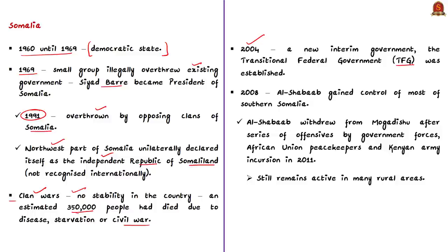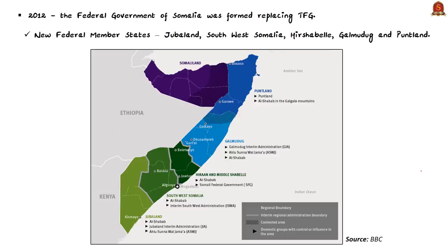In 2004, a new interim government called the Transitional Federal Government (TFG) was established to improve governance in the country. But in 2008, al-Shabaab, which has links with al-Qaeda, gained control of most of southern Somalia. After a series of offensives by government forces, African Union peacekeepers, and a Kenyan army incursion in 2011, al-Shabaab withdrew from Mogadishu, the capital city of Somalia, but still remains active in many rural areas.